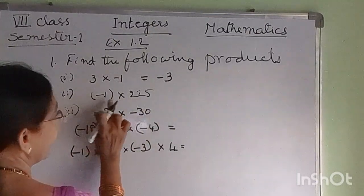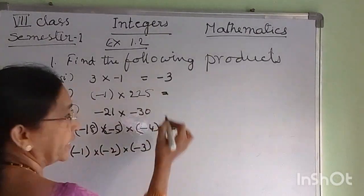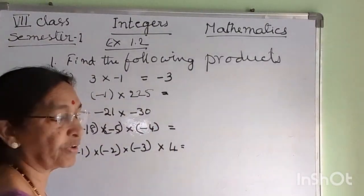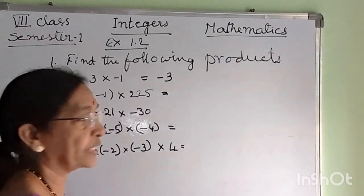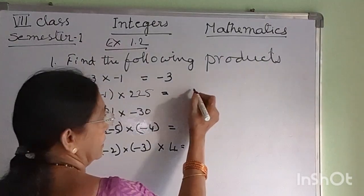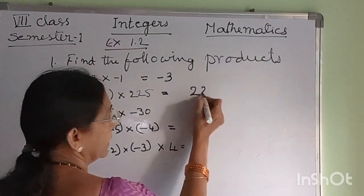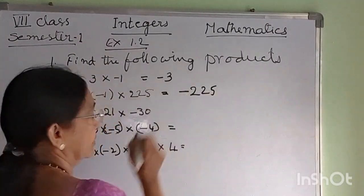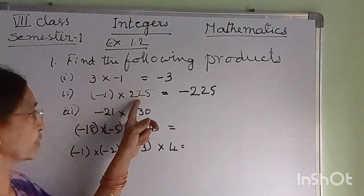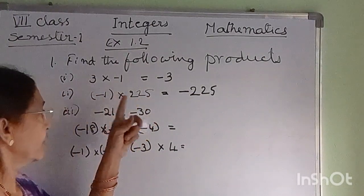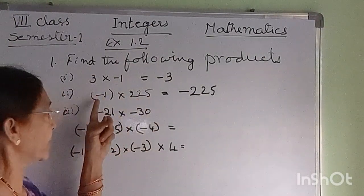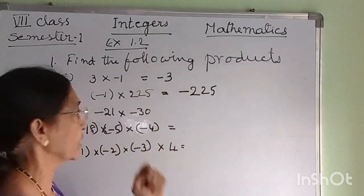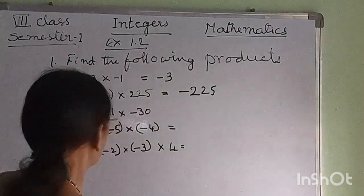Minus 1 into 225: when an integer is multiplied by minus 1, we get the same integer with the opposite sign. Since 225 is a positive integer, when multiplied by minus 1, we get minus 225.